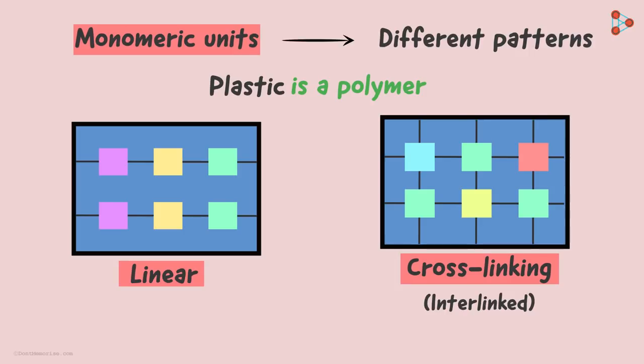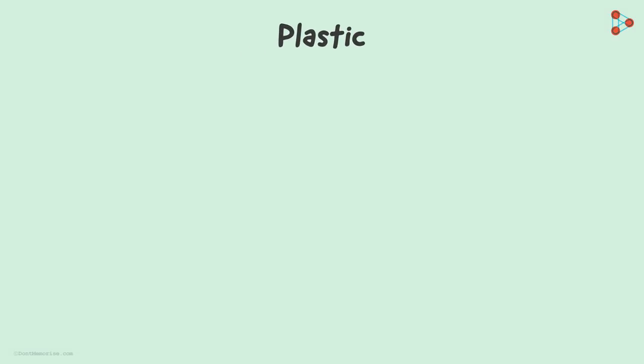However, plastics are usually classified in two major categories. Let us take two commonly used examples. One is the handle of our frying pan, while the other is a simple water bottle.